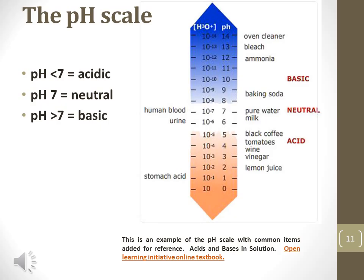This chart shows several common solutions and their pH values. Anything with a pH of exactly 7 means the concentration of hydrogen ions is equal to the concentration of hydroxide ions, and the solution is said to be neutral. Anything with a pH below 7 is acidic and has more hydrogen ions than hydroxide ions. Conversely, anything with a pH above 7 is basic or alkaline and has more hydroxide ions than hydrogen ions.